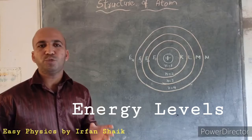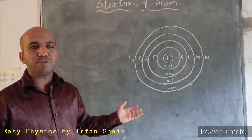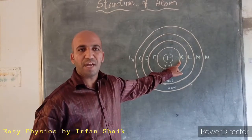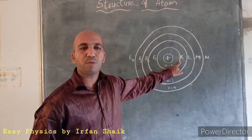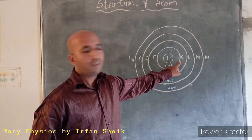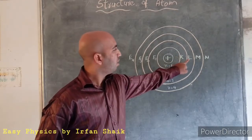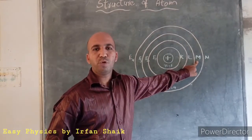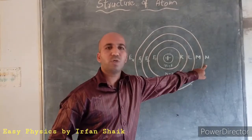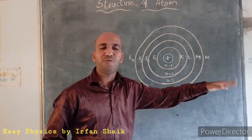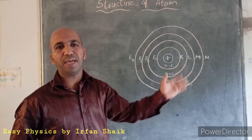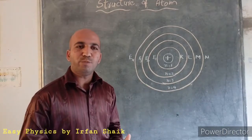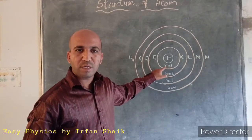Bohr gave names to each orbit. The first orbit, which is closer to the nucleus, is called the K shell. The second orbit from the nucleus is called the L shell, the third is called the M shell, the fourth is called the N shell, and a fifth would be called the O shell, and so on: K, L, M, N, O, P.